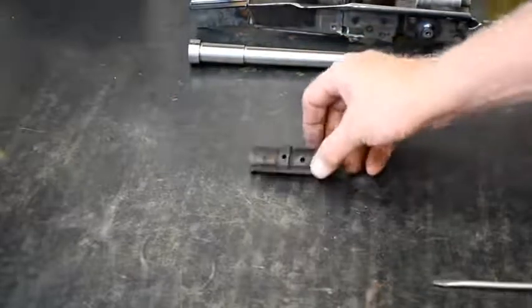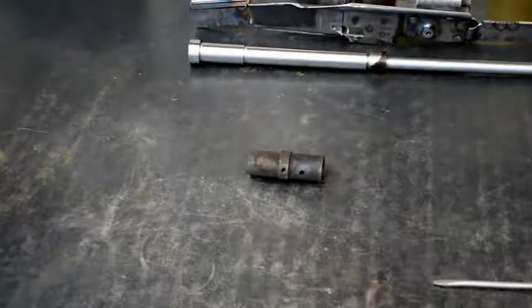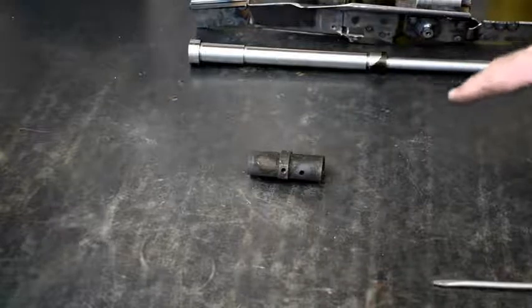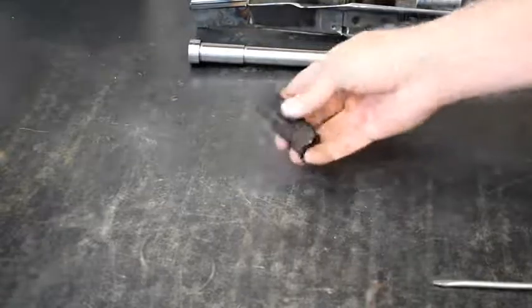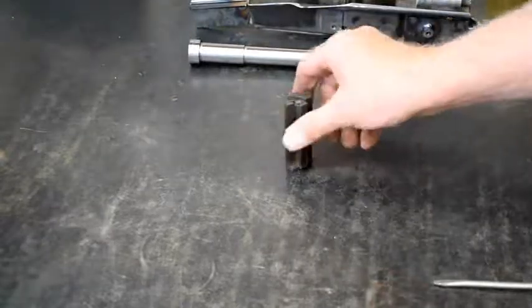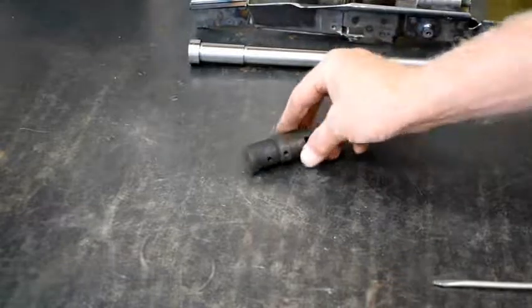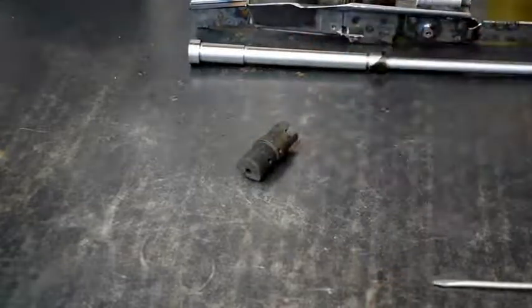All the bolts have come back from heat treat. 8620, with a 20 thou case hardening on it. They need to be blasted to clean off the scale that's formed on them, and then matched up to their upper receivers.